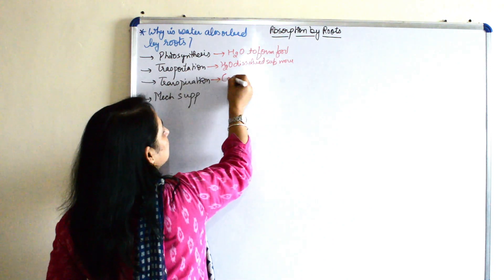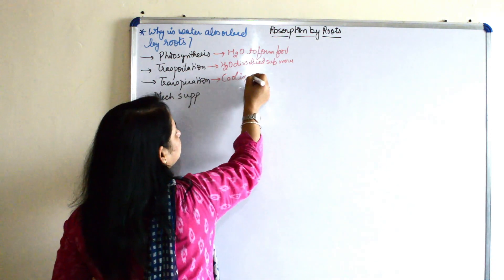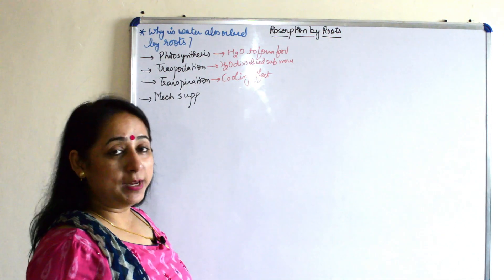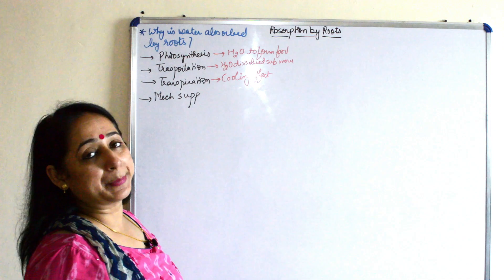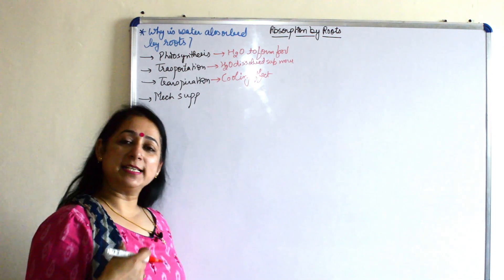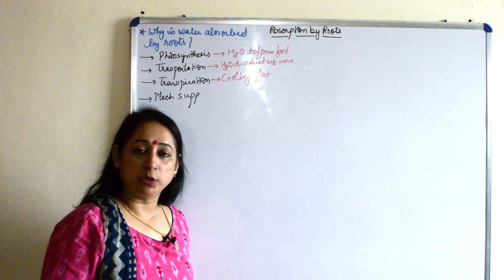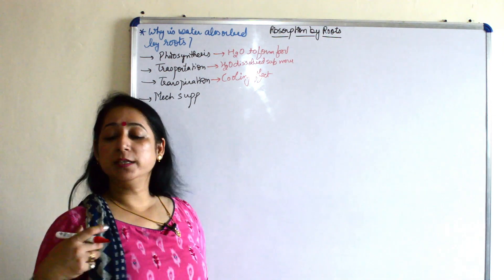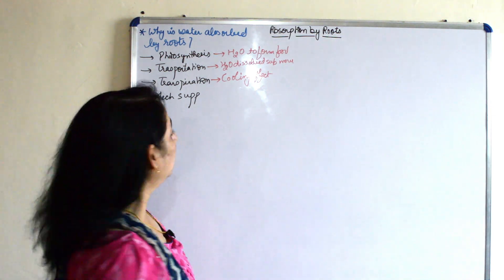Transpiration provides a cooling effect. We will discuss it in detail when we talk about the chapter transpiration. So whatever excessive water is there is transported out or transpired out from the plant. This transpiration provides a cooling effect to the plant.